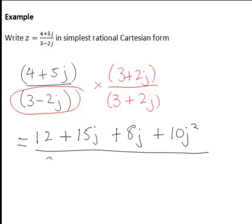3 times 3 is 9, then negative 2j times 3 gives minus 6j. So you can see the same thing as before is going to happen: 3 times 2j is plus 6j, and then negative 2j times 2j is minus 4j squared.